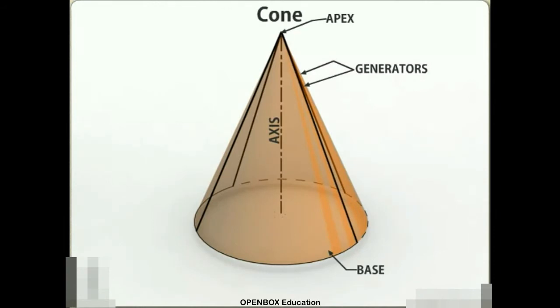Straight lines drawn from the apex to the circumference of the base circle are all equal and are called generators of the cone. The length of the generator is the slant height of the cone.